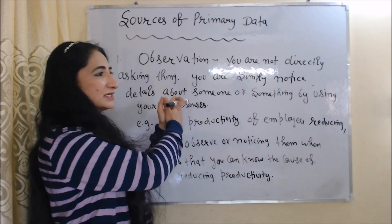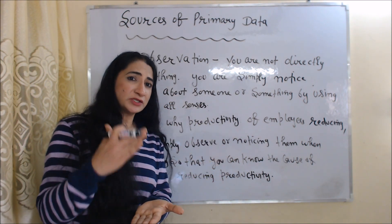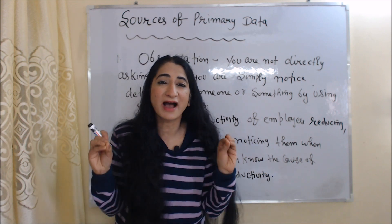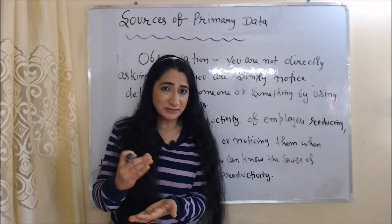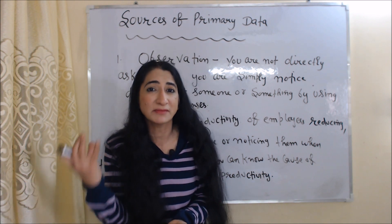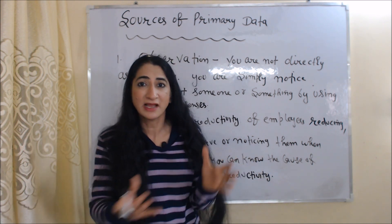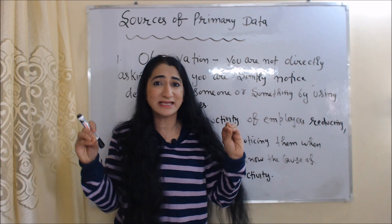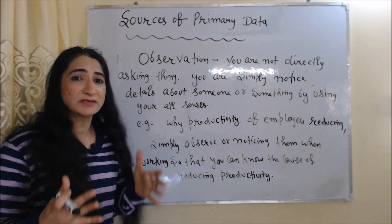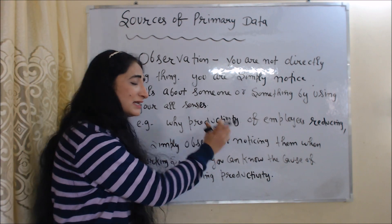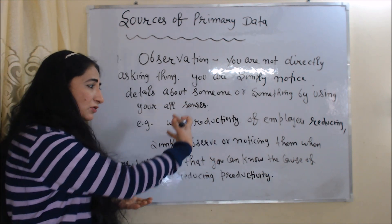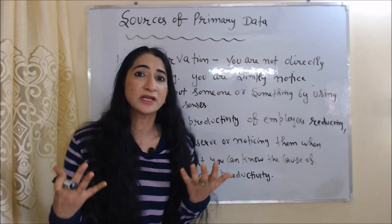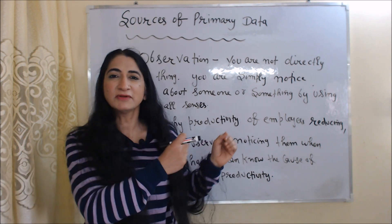The first source of primary data is observation. Under the observation method, you will not directly ask anything to your respondent. You simply notice details about something or someone using all your senses. For example, you want to get information about why the productivity of employees is reducing. You will not directly ask the employees anything — you simply observe them while they are working so that you can know the cause of reducing productivity. This is called the observation method.